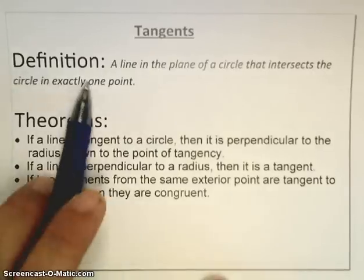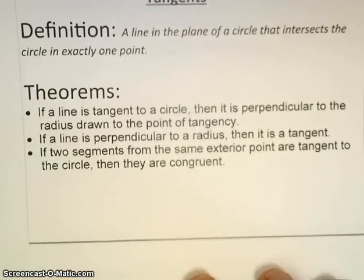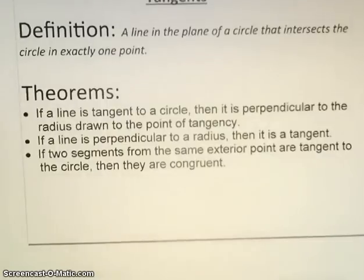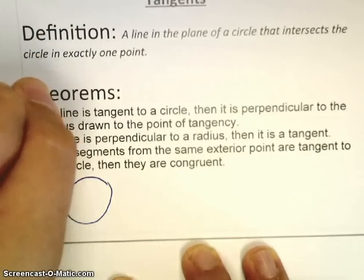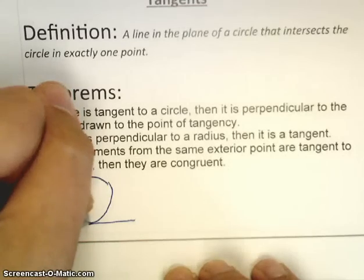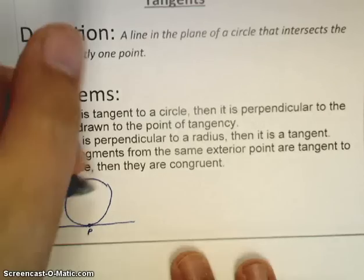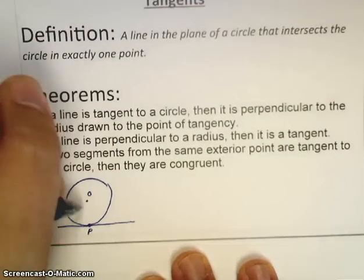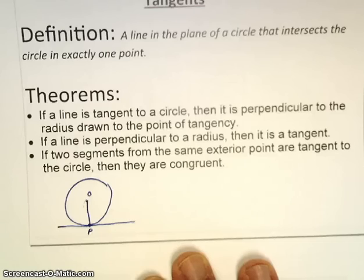We've already discussed the definition of a tangent. However, three theorems can be concluded from tangent lines. Number one, if a line is tangent to a circle, then it is perpendicular to the radius drawn at the point of tangency. What does that look like? Well, if I draw a circle with a tangent line that touches it at this point, we'll call that point P, I know that if I draw my center of my circle O, OP is going to create a radius. The radius OP and the tangent line here, which contains P, will be perpendicular to each other.